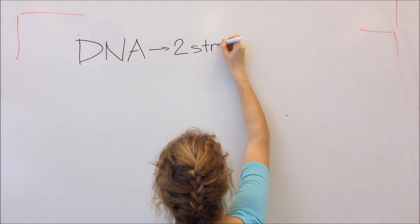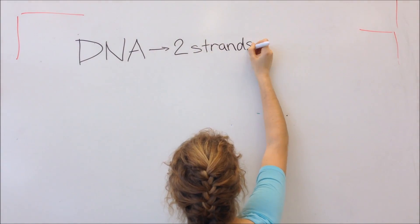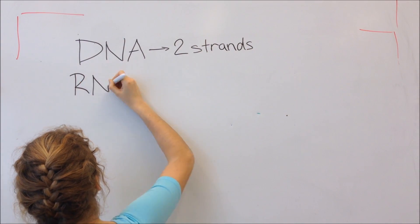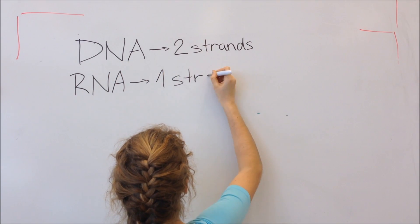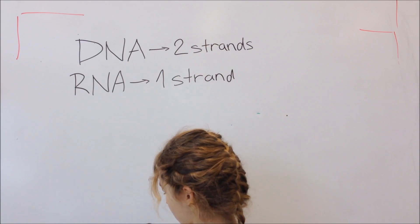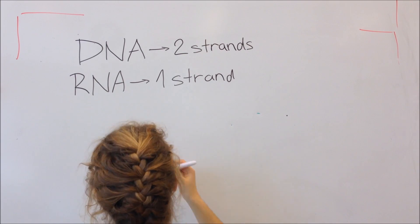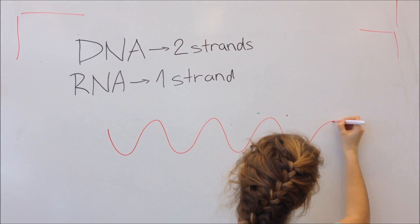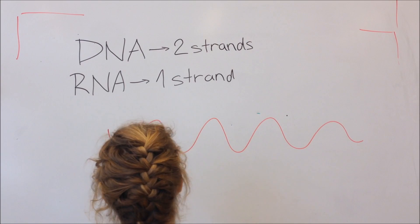The strands on DNA will be during transcription divided into two: the antisense strand, or the template strand, which serves as the template, and the sense strand. RNA will need to complement the template strand, meaning it will essentially be a copy of the sense strand, the other strand.